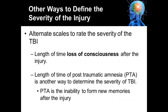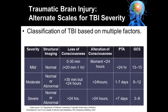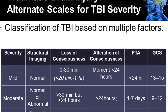There are alternative scales to rate the severity of a traumatic brain injury. The length of time of a loss of consciousness after the injury is one way severity can be classified. Another way is the length of time of post-traumatic amnesia (PTA), which is the inability to form new memories after the injury. This table summarizes how a traumatic brain injury is classified as mild, moderate, or severe. For example, in mild traumatic brain injury or concussion, there's usually no structural damage to the brain.